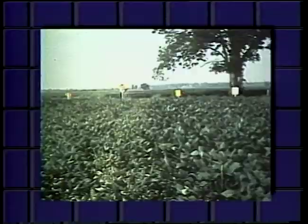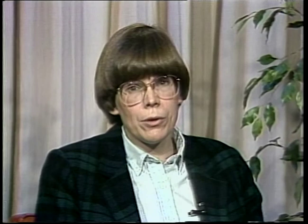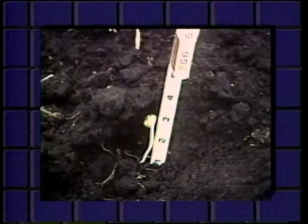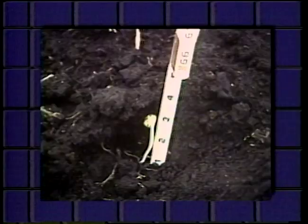The next area to consider is your planting practices, which include seed quality, soil conditions at planting, planting date, planting populations, and planting depth. These planting practices will influence rate of emergence, vigor of seedlings, and stand establishment, and can also influence the likelihood of disease development. Good seed quality, proper soil conditions for planting, and optimum planting date, depth, and population can help minimize the incidence and severity of many plant diseases.